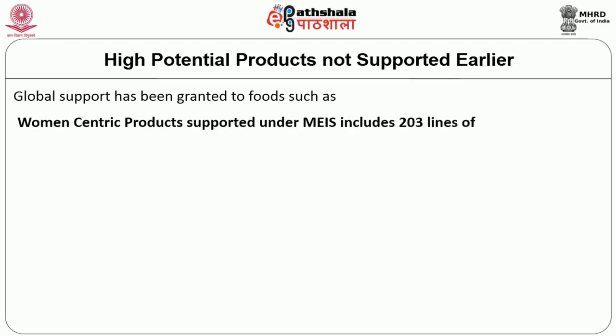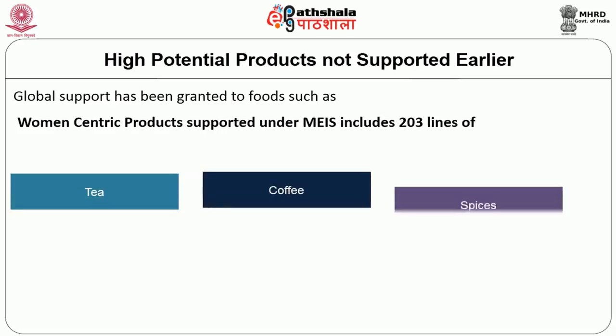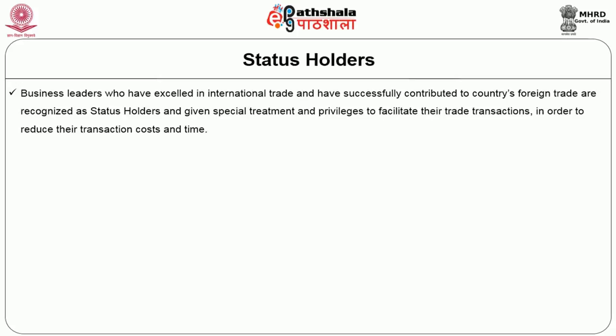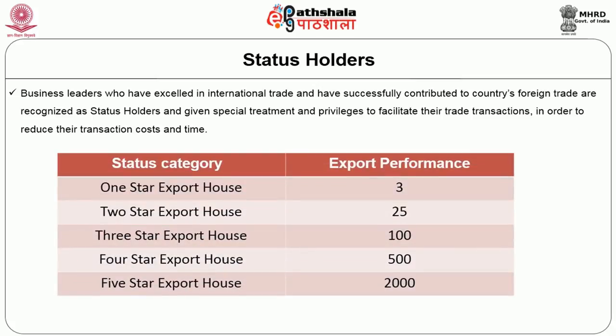Women-centric products supported under MEIS include 203 lines falling under the category of tea, coffee, spices, cashew, and manufacture of other products. Status holders are given recognition based upon the transaction or value of commodities exported, starting from 1 to 5 star. The FOB value in US dollars: 3 million dollars is 1 star status; 25 million is 2 star; 100 million is 3 star; 500 million is 4 star; and 2000 million dollars is 5 star status. This is mainly to encourage the exporters to export more of the commodity.